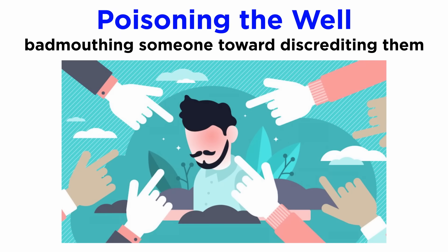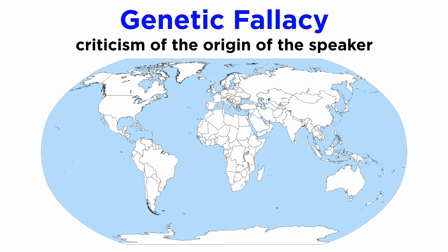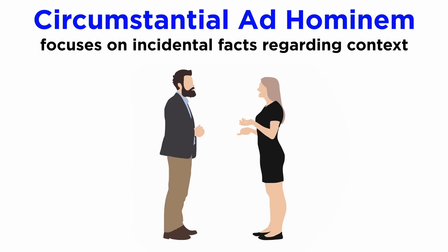A few variations to the ad hominem fallacy involve poisoning the well, or attempting to badmouth someone toward discrediting anything they say. The genetic fallacy, where the origin of the speaker is criticized in order to invalidate their arguments. And the circumstantial ad hominem, where indirect, incidental facts about the context of one's argumentation are used to try and invalidate their argument.